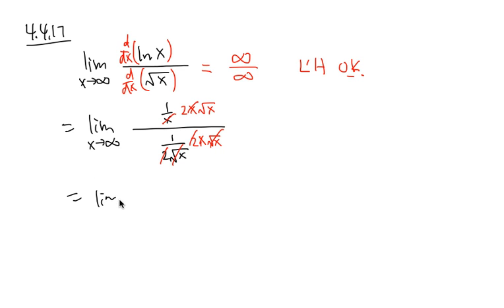So, altogether, I will have the limit when x is approaching infinity. On the top, I have 2 square root of x, and on the bottom, I just have an x.